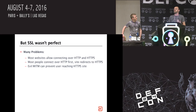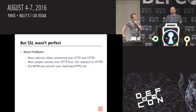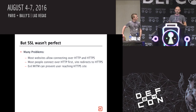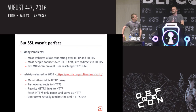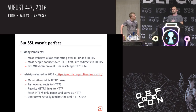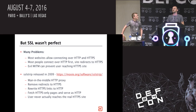But SSL wasn't perfect. A lot of websites allowed connecting over both HTTP and HTTPS. People connect to HTTP first because who writes the 'S' when putting in their URLs? Evil man-in-the-middle attacks can prevent users from reaching HTTPS sites and force them to fall back to unencrypted sites. Moxie Marlinspike demonstrated this in 2009 with SSL Strip - a great tool for man-in-the-middling these connections, downgrading them all to HTTP. The only indication to the user was the padlock in the corner of the screen wasn't there, and a lot of users wouldn't be checking that anyway.